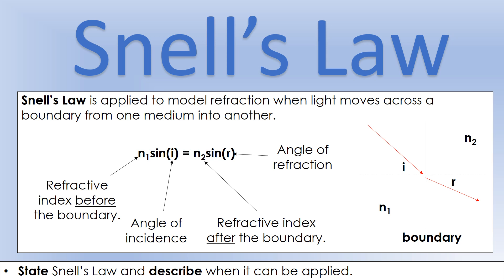Snell's law has four key parts. It has the refractive index before the boundary called n1, the angle of incidence measured to the normal, the angle of refraction again measured to the normal, and the refractive index after the boundary called n2.